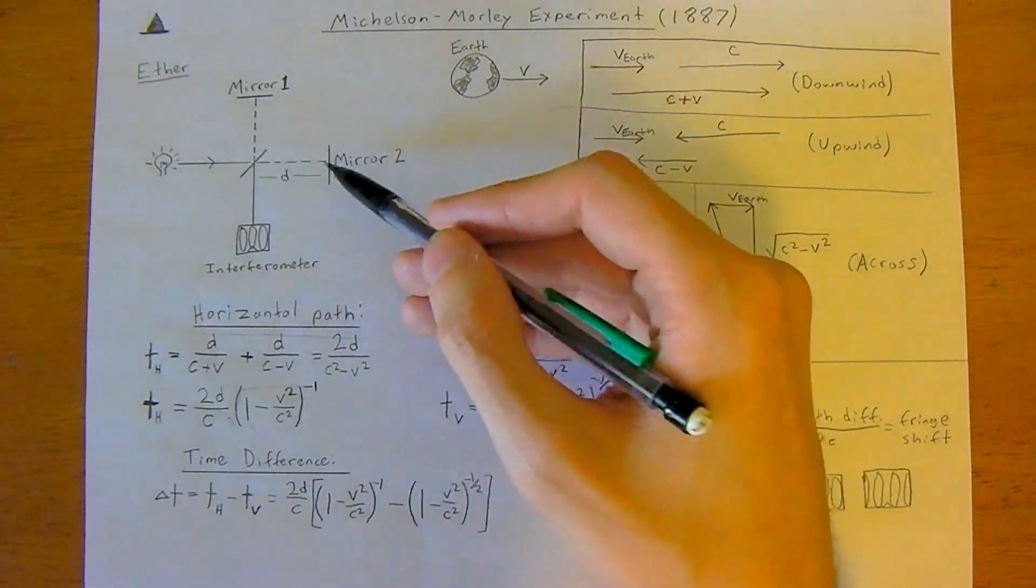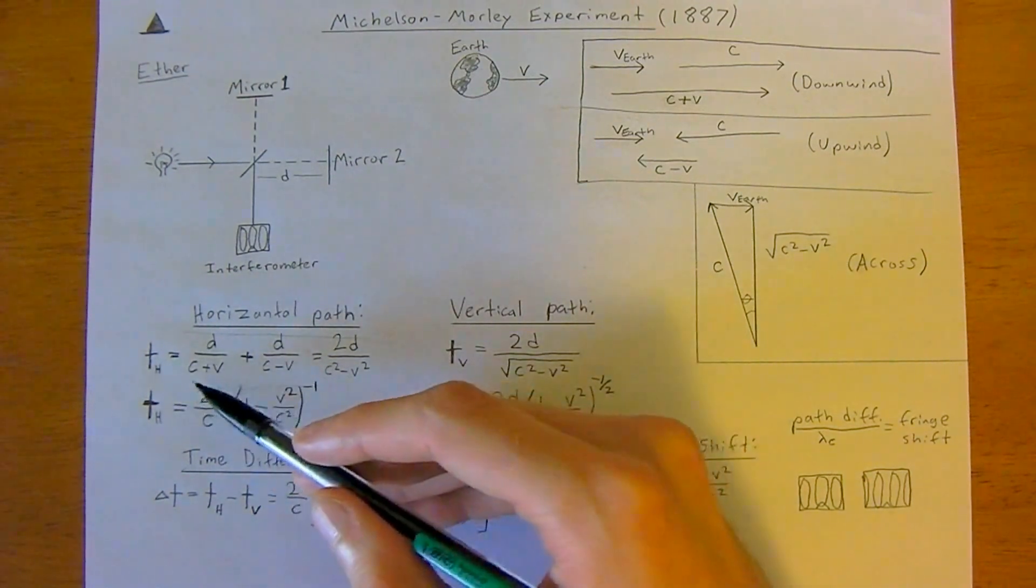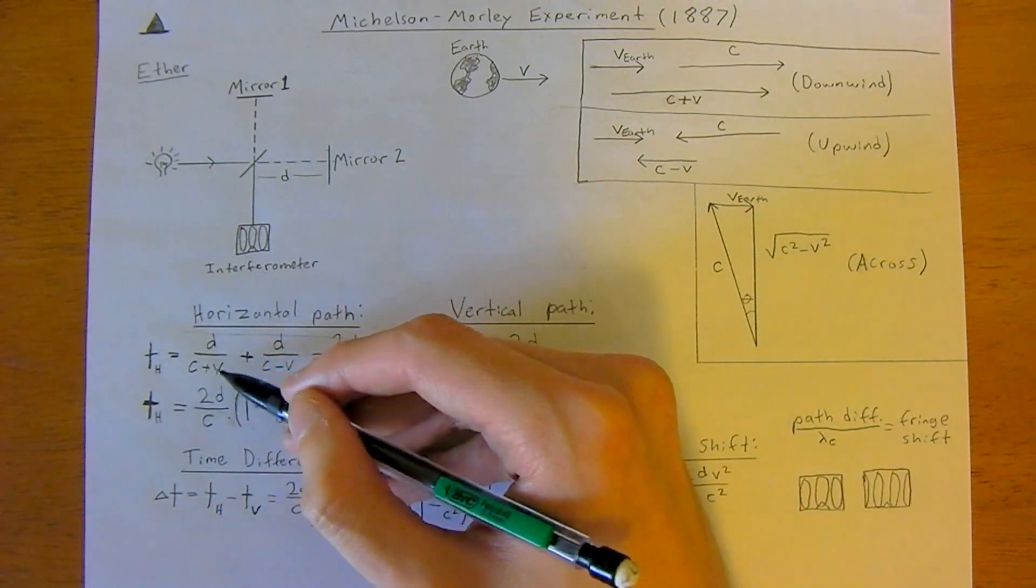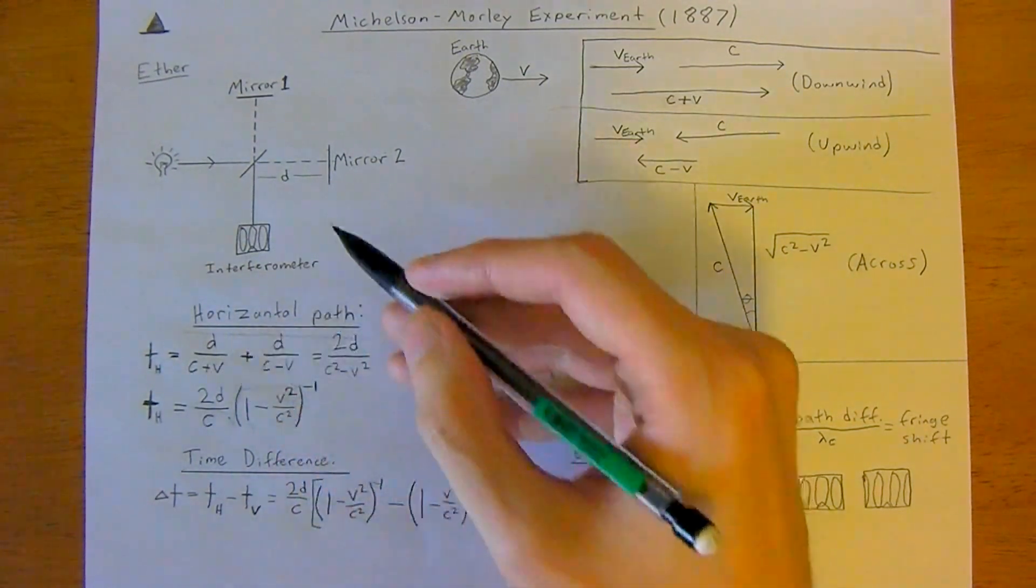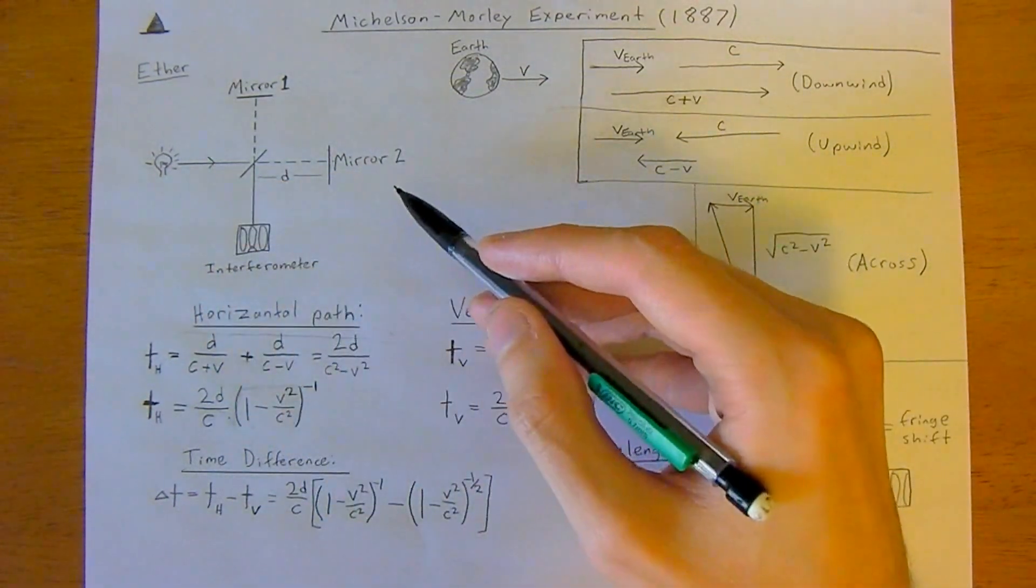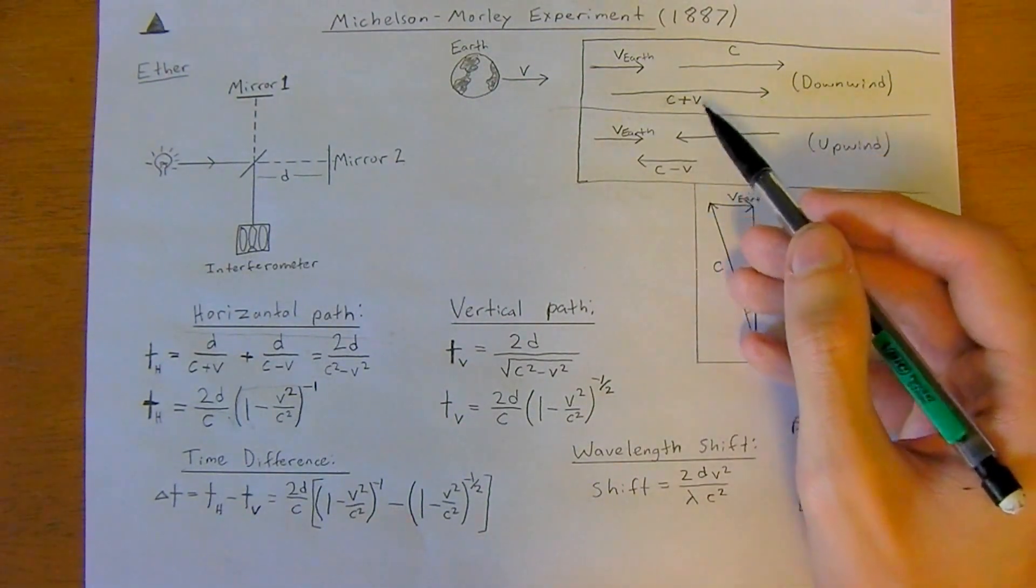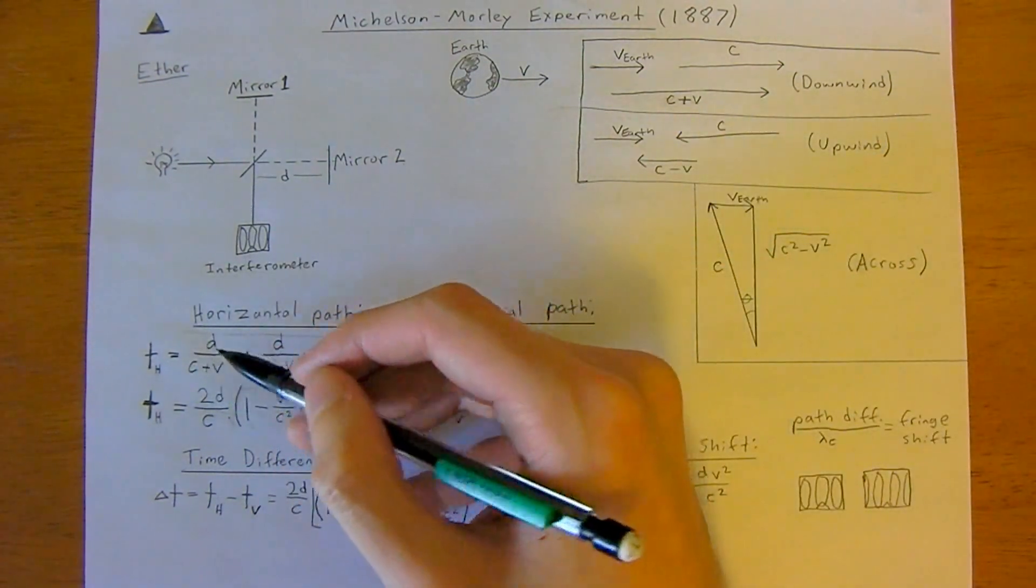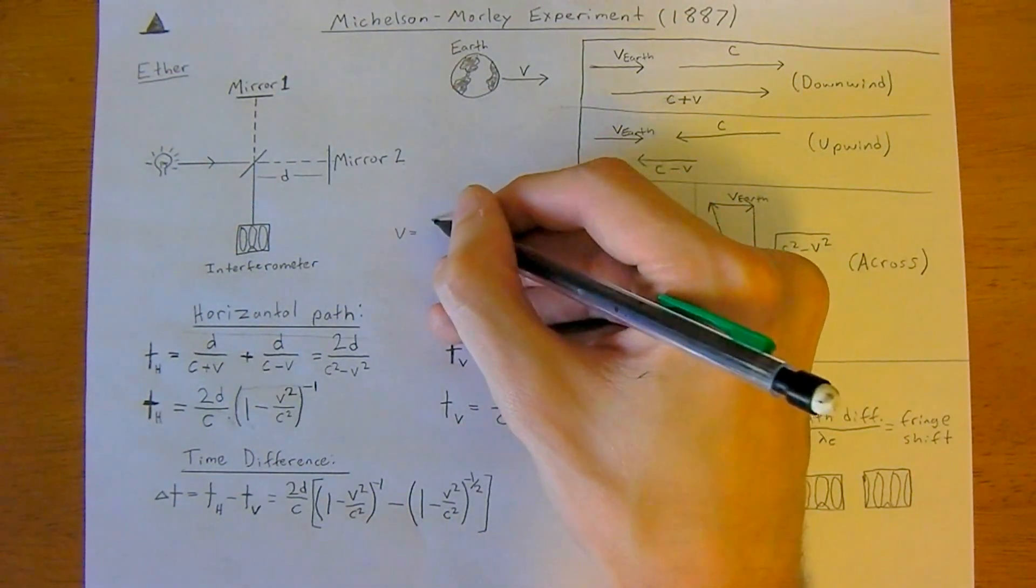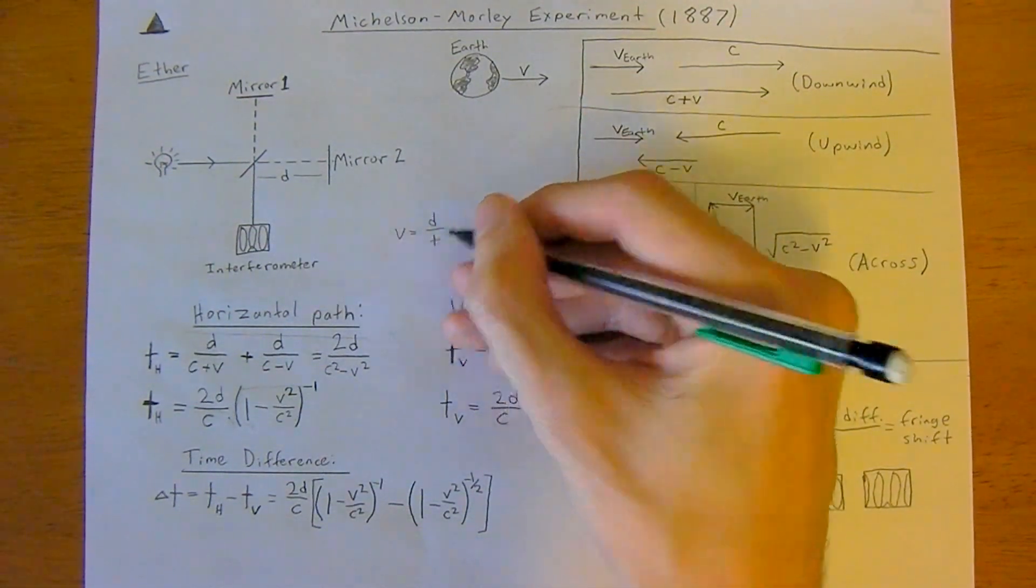In the horizontal path, going this way, they were measuring the time in the horizontal direction. That would be d divided by c plus v, because the earth is moving this direction and light was also coming to the right, so the two of them add together. This comes from velocity, which is just your change in x, or in this case d, divided by t. You rearrange that: t is d divided by v.